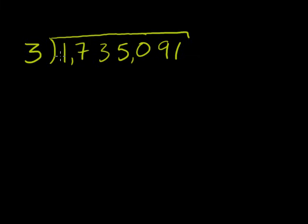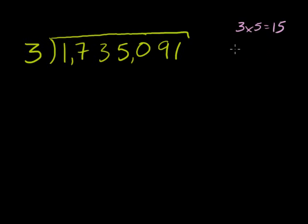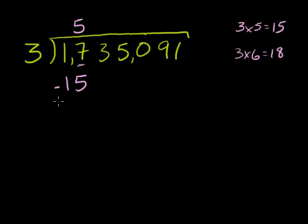So let's do this one. 3 goes into 1, 0 times, so we move forward. 3 goes into 17 how many times? 3 times 5 is 15, and 3 times 6 is 18 — that's too big. So 3 goes into 17, 5 times. 5 times 3 is 15, and we subtract. 17 minus 15 is 2.